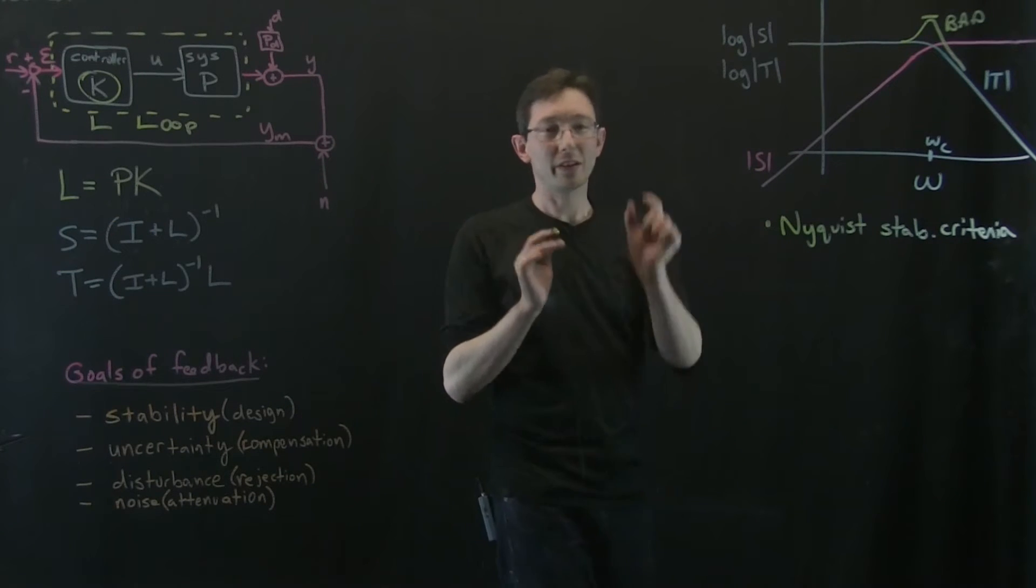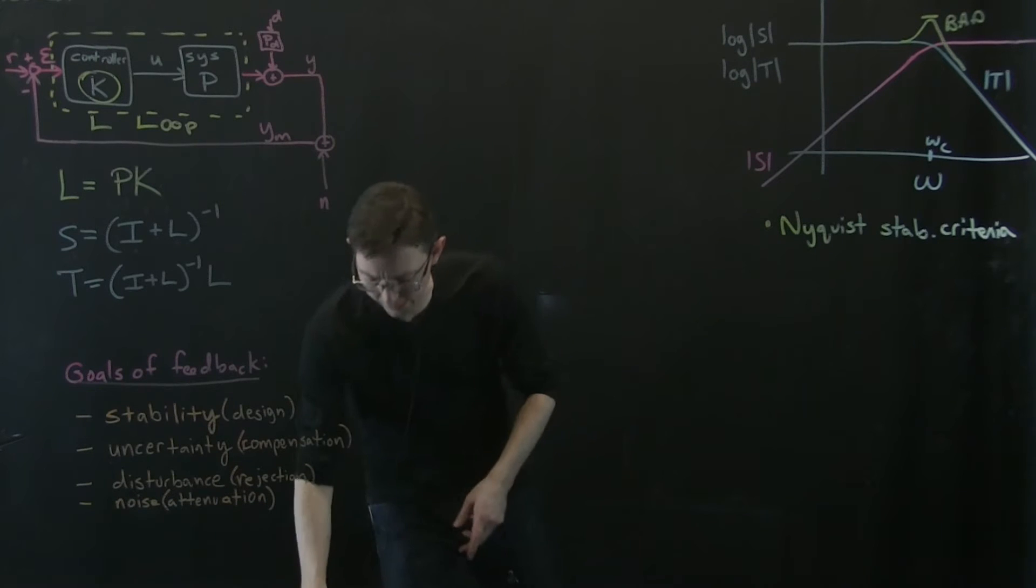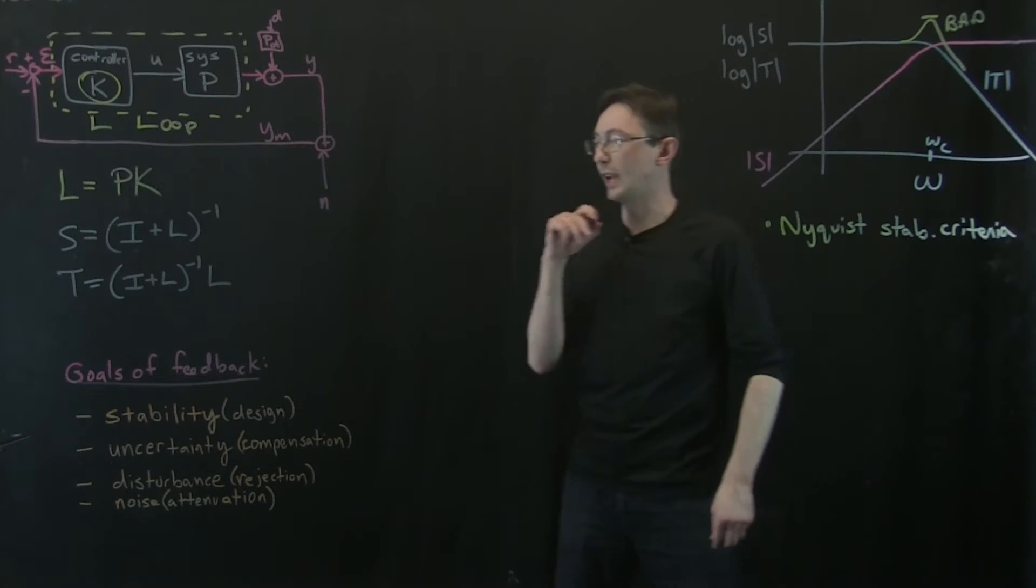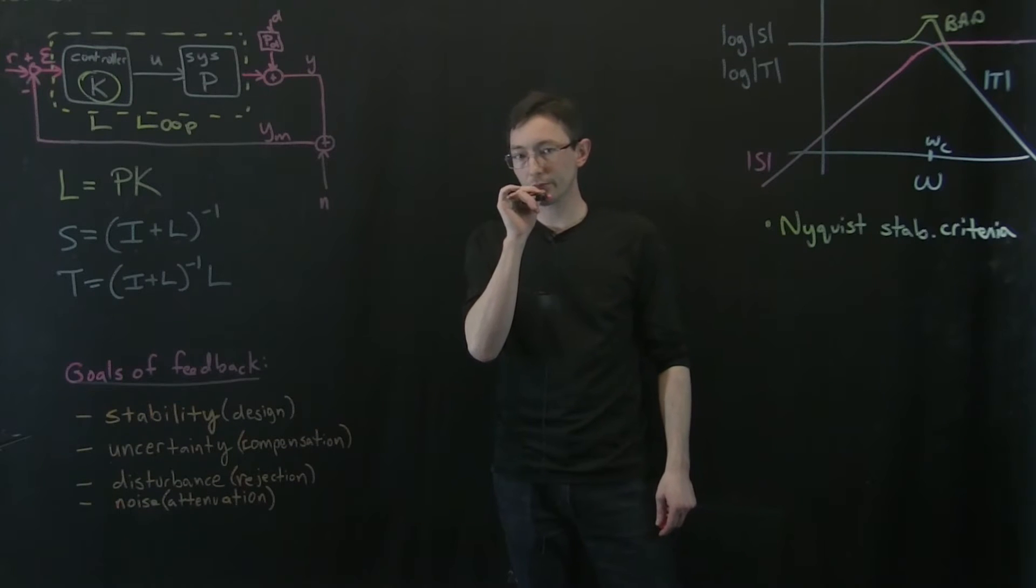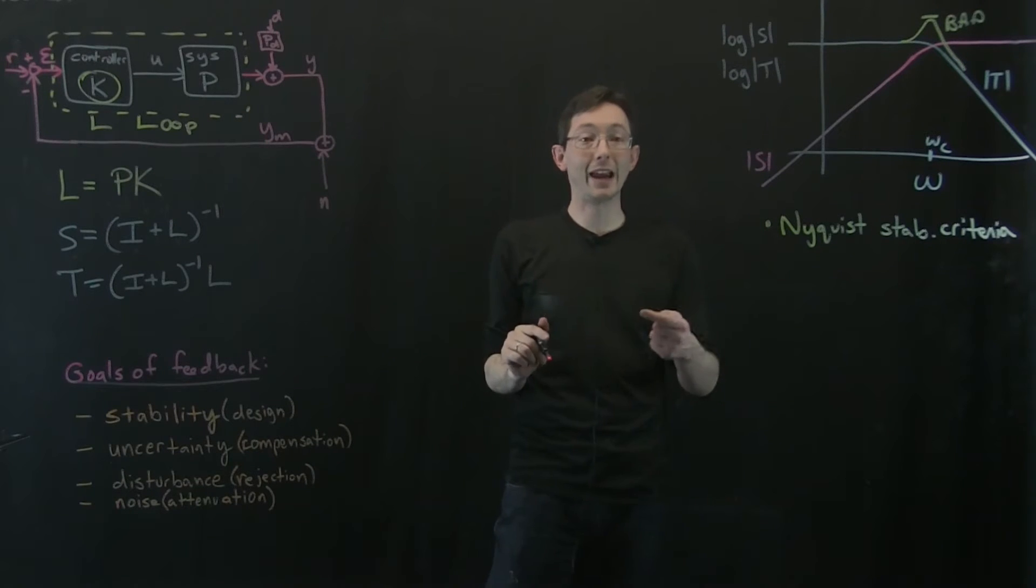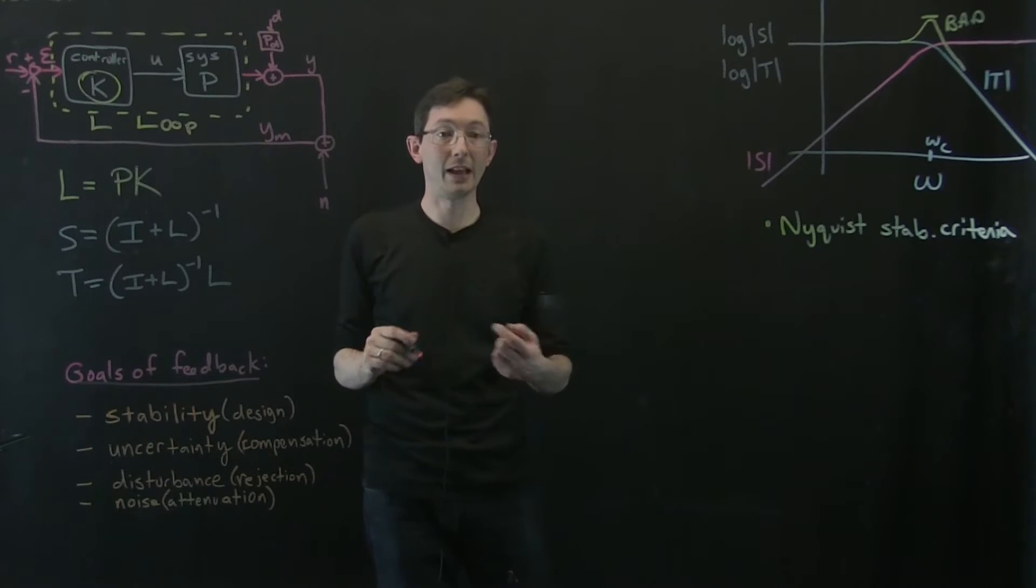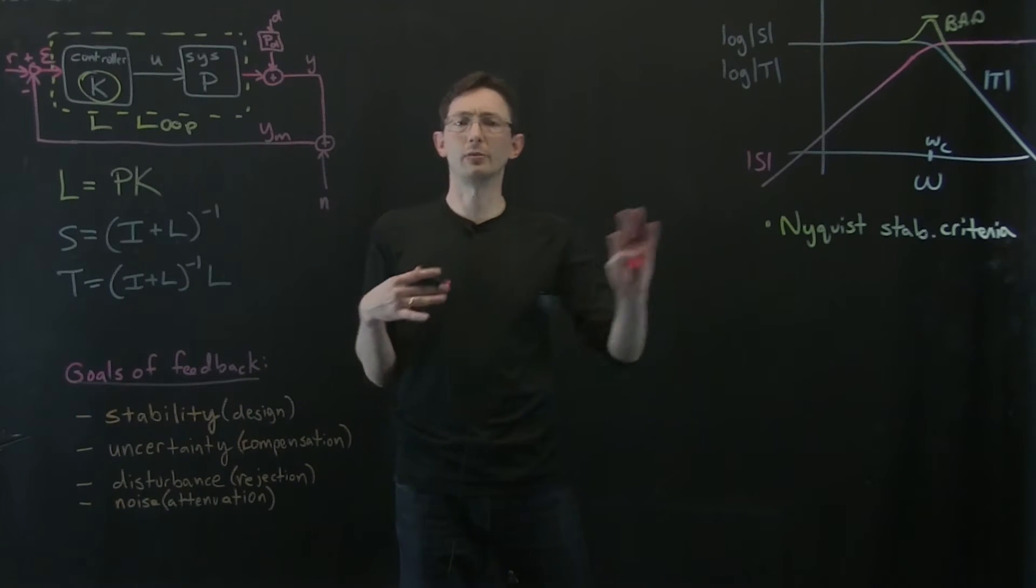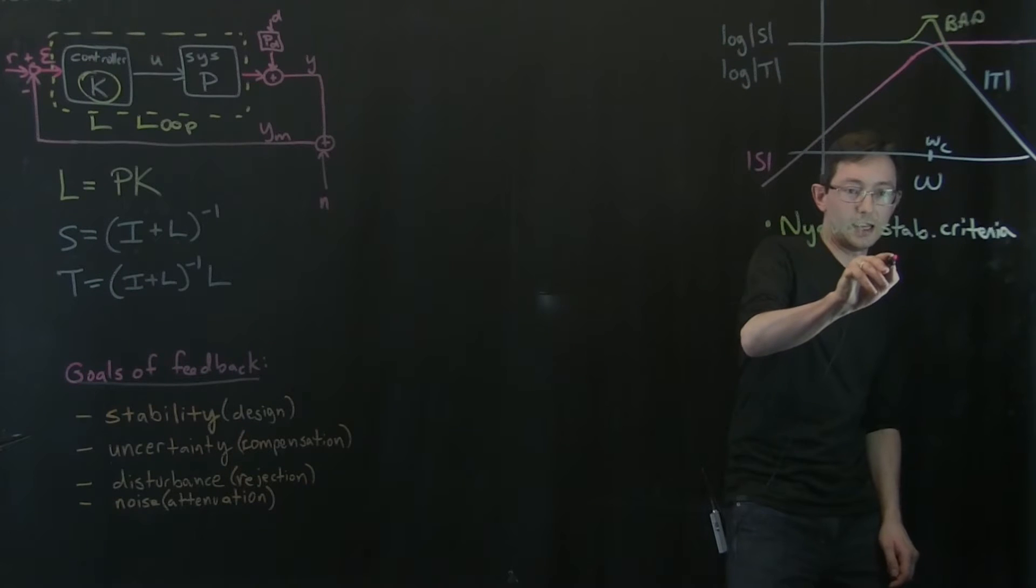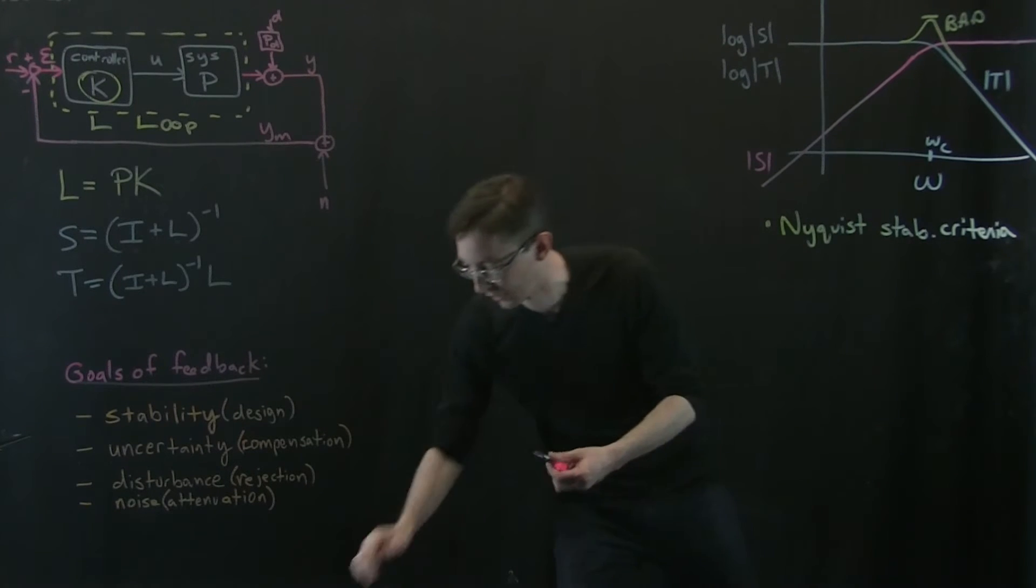And so we're going to kind of take for granted or use this Nyquist stability criteria in the derivation of showing that S is related to robustness. But I'm going to give you a little cartoon that gives some insight into this because it's kind of intuitively what we would think. So the idea is